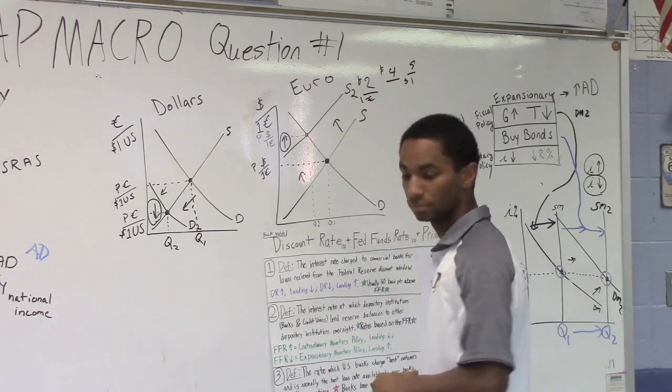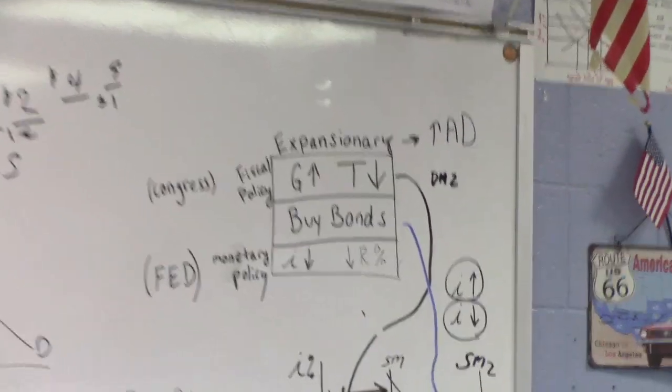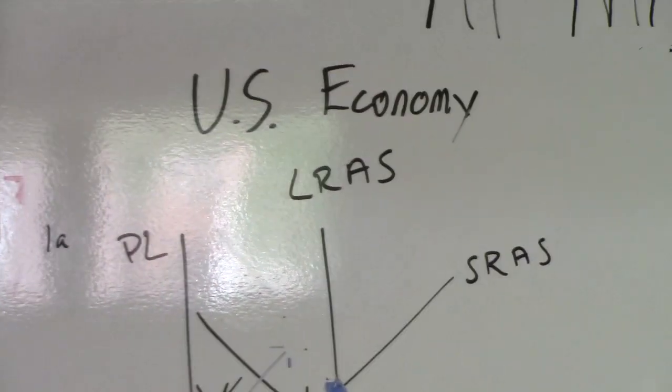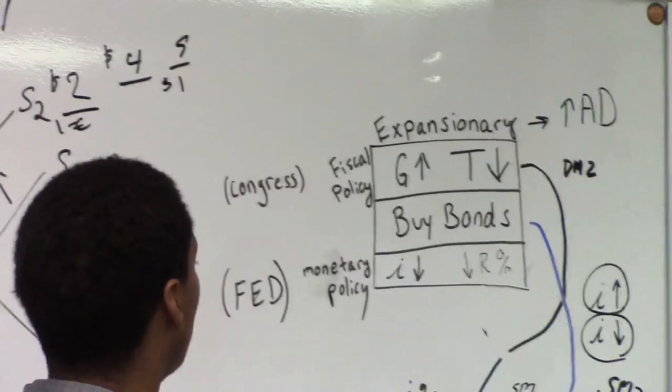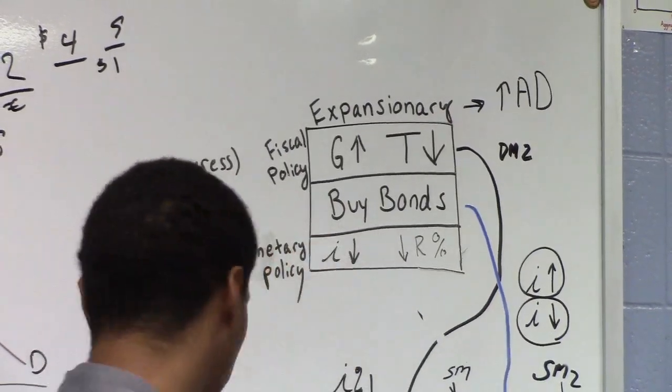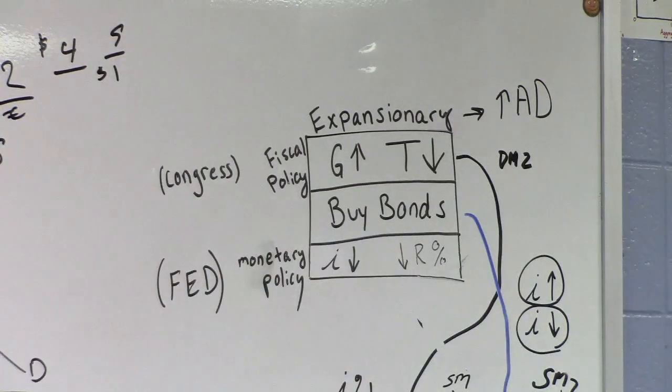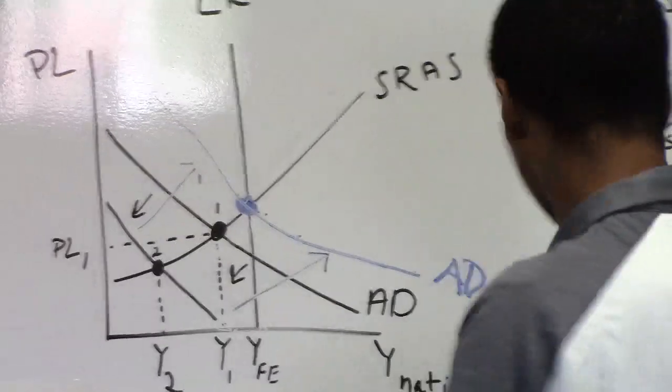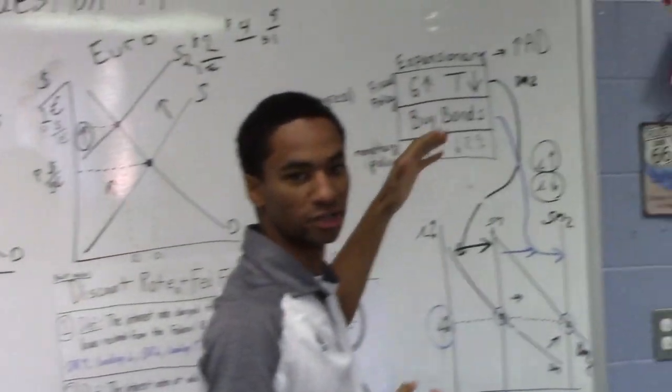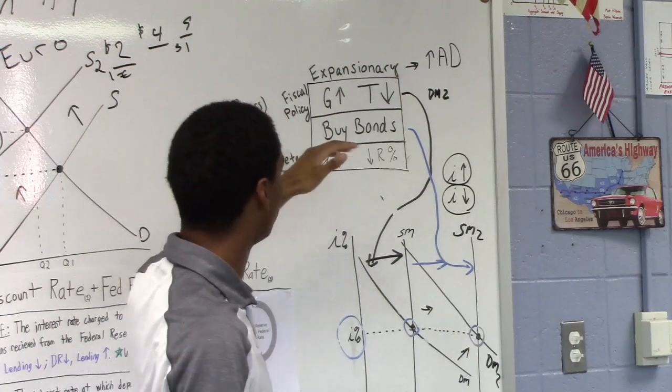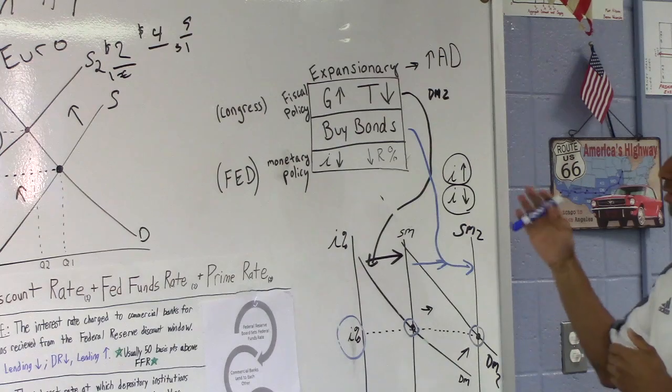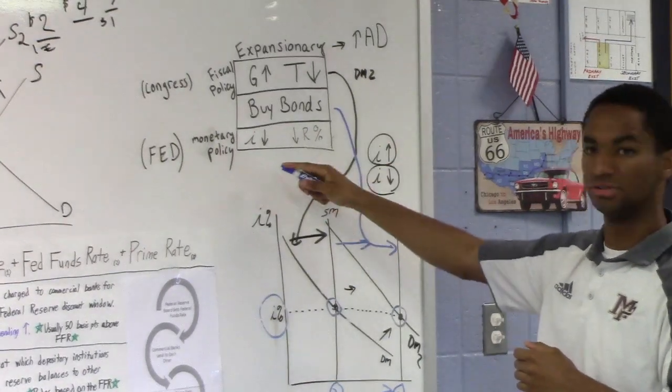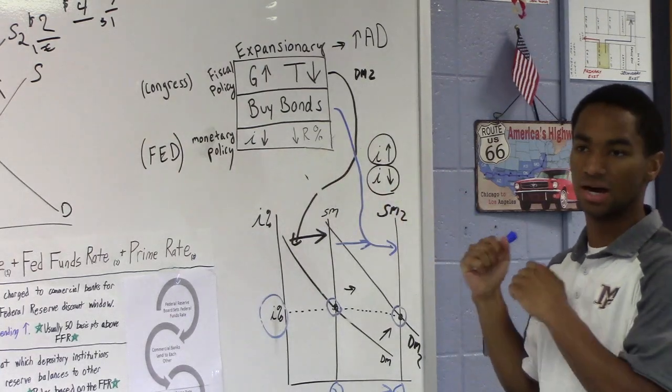Assume the United States implements a combination of expansionary fiscal and monetary policies. In the absence of complete crowding out, what will the effect of these policies have on each of the following? Aggregate demand in the U.S., the price level in the U.S., interest rates in the U.S. Explain interest rates. So, aggregate demand in the United States is first. In the United States, expansionary fiscal policy will increase the, the goal is to increase aggregate demand, which will reduce the recessionary gap. For fiscal policy, Congress is the one who will enact all the policies. Policies are to increase government spending and to decrease taxes to increase aggregate demand. And for the monetary policy, that is enacted by the Fed, and that is to buy bonds and to decrease interest rates and also to decrease the reserve ratios within the banks.